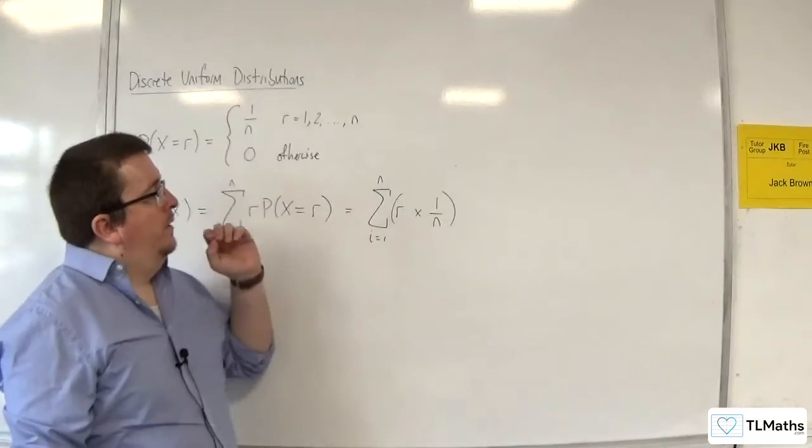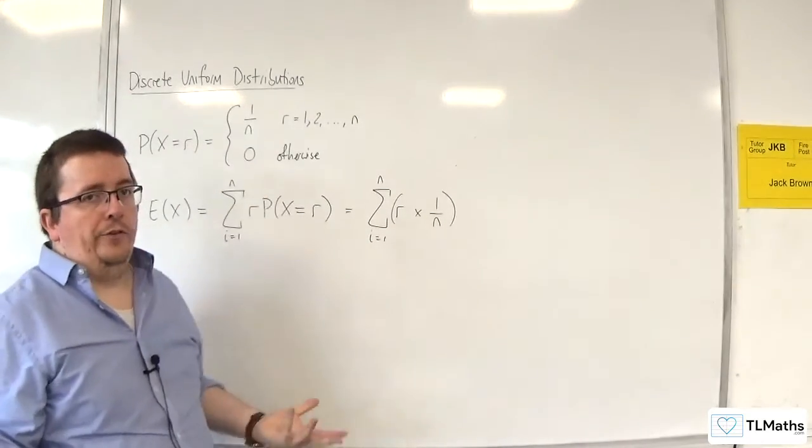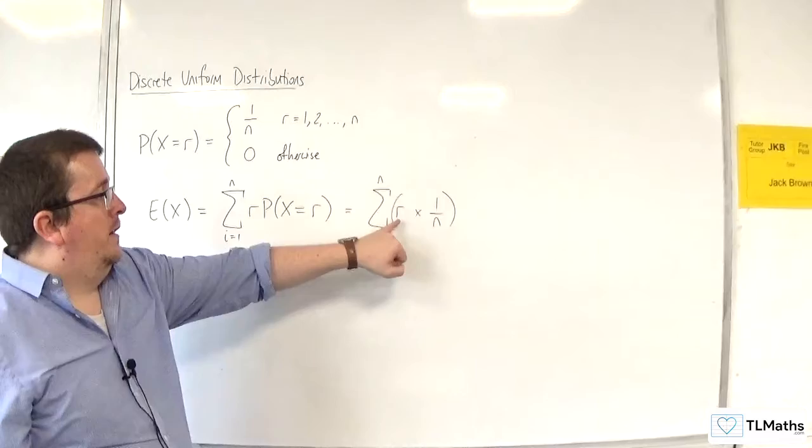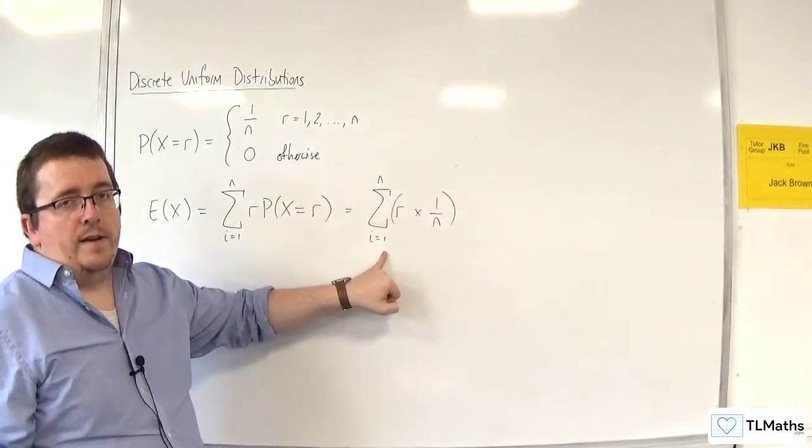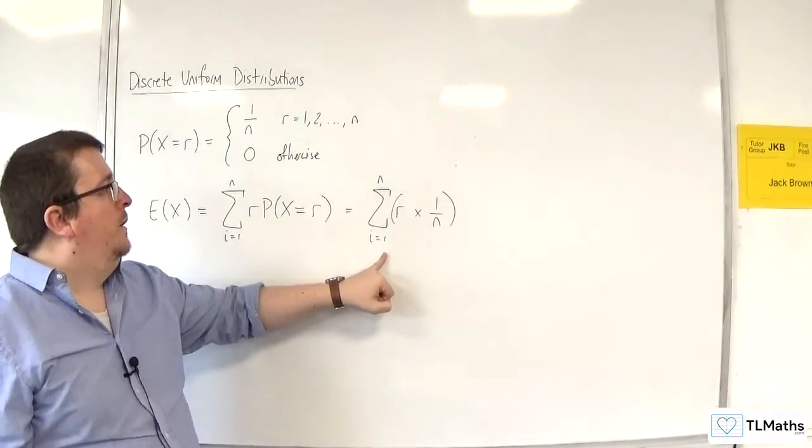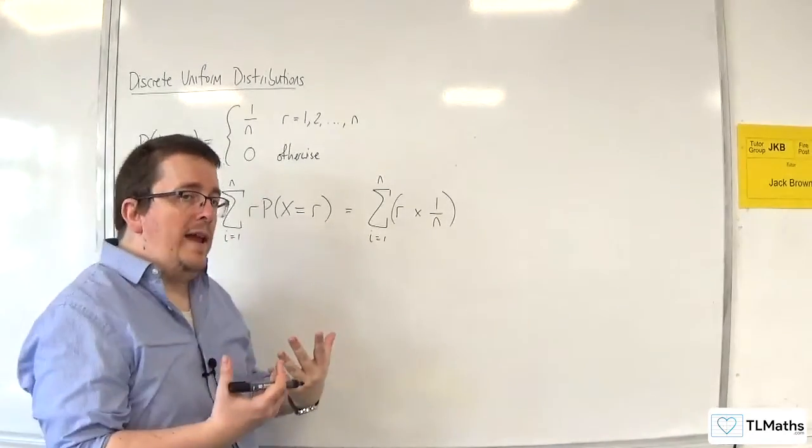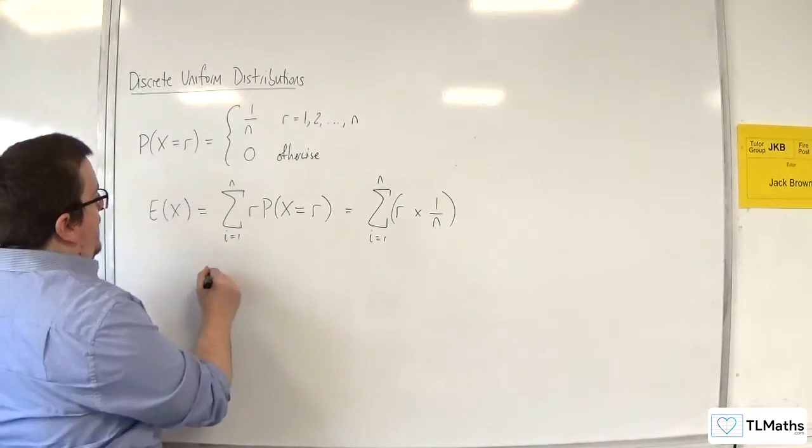Now, the 1 over n is constant. That's not going to change. The r does change depending on the i that I'm working with. So, the 1 over n is just a constant multiplier that I can bring out to the front of my summation.